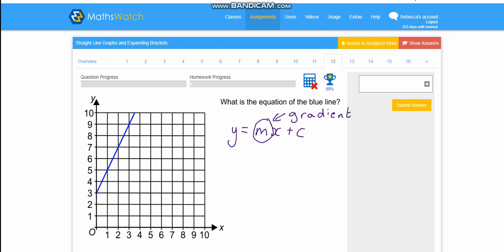So from the previous questions that we did we know how to find out the gradient, so we can definitely figure out what's going to go where the m is. So as we said we're going to draw our triangle, so we can start from here and we're going to draw it out this way and then we can draw it up to here.